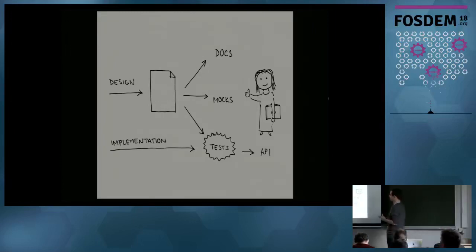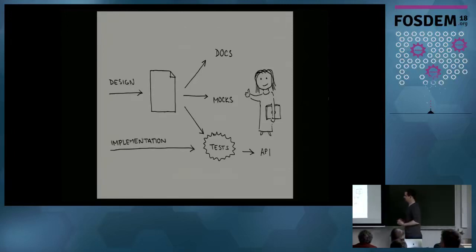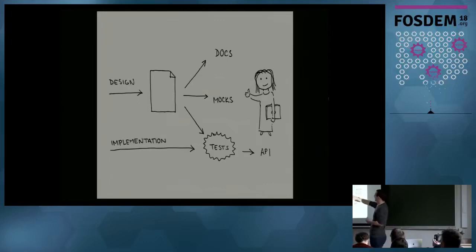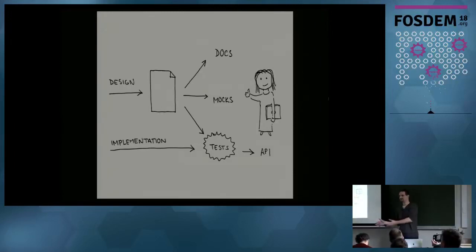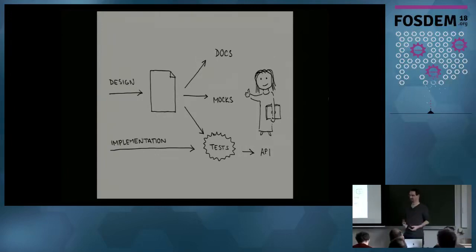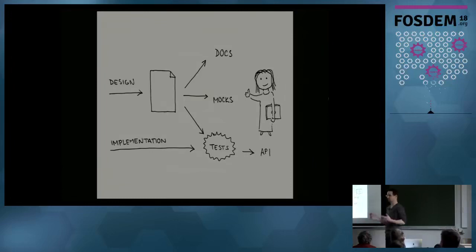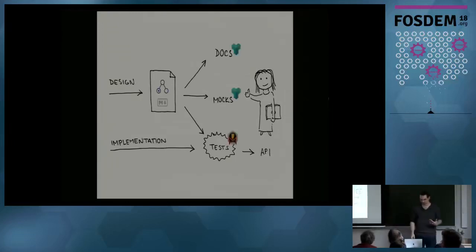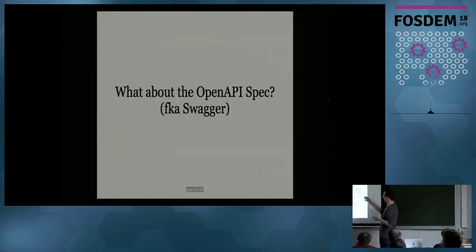Moreover, you can make the document you wrote something central to your API development. As it's machine-readable, you can parse it, you can generate documentation from it, you can generate a mock server from it. A mock server just replies with the examples, and you can give it to your mobile developers before the actual implementation of the API has started. They can try out the API and give you feedback — like 'this parameter doesn't work' — and you didn't write a single line of code and you already have real-world feedback on your API. The document becomes a single source of truth about your API. This is API Blueprint — it's Markdown-based — and this is what we do in Apiary, and what I do in Apiary.